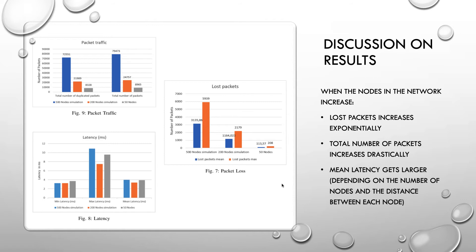Regarding the results, figure 7 shows a bar chart depicting lost packets. Lost packets increase exponentially with increasing cars in the network. The same trend appears with packet traffic in figure 9, where the total number of duplicated packets and total packets increases drastically with more cars in the network. For example, 500 nodes have far more duplicated packets compared to 200 nodes in the network.